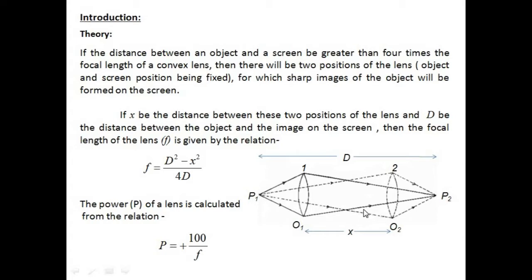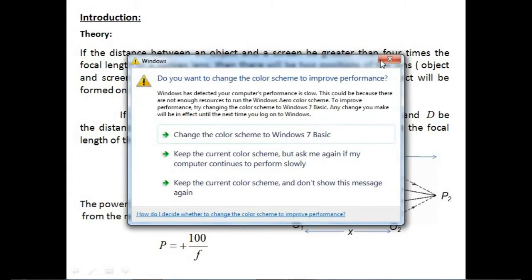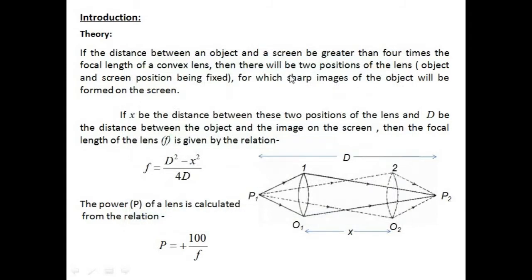This is known as the displacement method. Now, if the distance between an object and the screen is greater than four times the focal length of a convex lens, then there will be two positions of the lens — keeping the object and screen positions fixed — for which sharp images of the object will be formed on the screen.